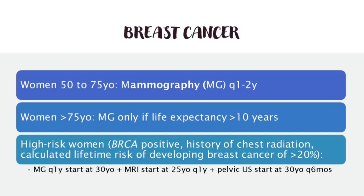Breast cancer screening guidelines: the cutoff is age 50–75, during which mammography is performed every one to two years. If the lady is more than 75, perform mammography only if life expectancy is more than ten years. For high-risk women — BRCA positive, history of chest radiation, or calculated lifetime risk more than 20% — start mammography yearly at age 30, perform MRI starting at age 25 annually, and pelvic ultrasound starting at 30 years every six months.